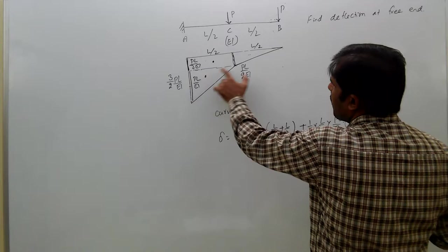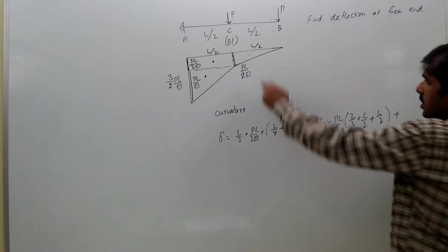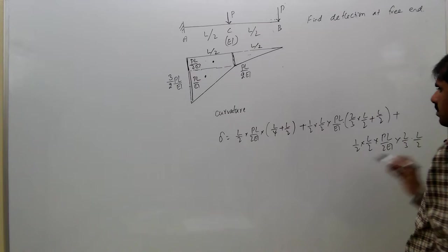Here which is the third triangle: half into base L/2 into height PL/2EI into centroidal distance 2/3 of L/2.